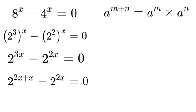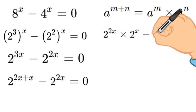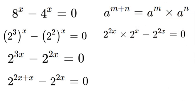Now using that property we can rewrite the first part of our equation like so. We'll have 2 to the 2x times 2 to the x minus 2 to the 2x equals 0. That's a lot of powers to say.